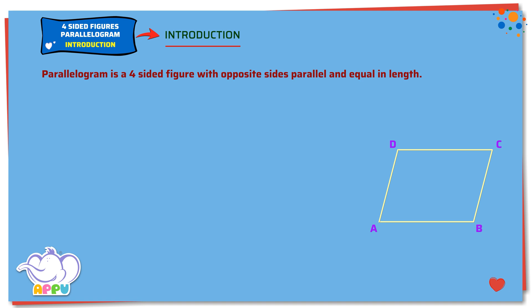In any parallelogram, opposite sides are parallel. Parallel means the lines never meet. Here AB is parallel to CD and AD is parallel to BC.